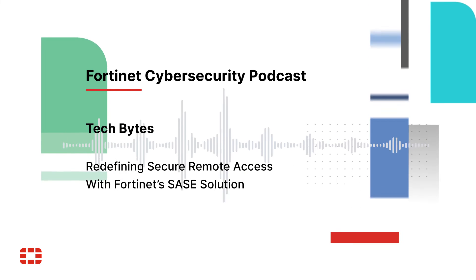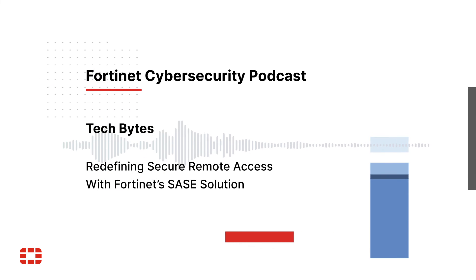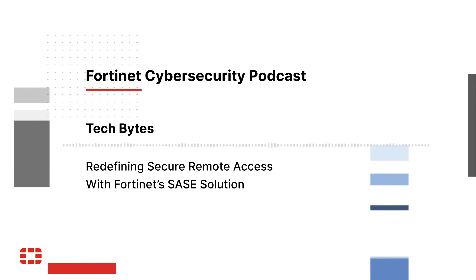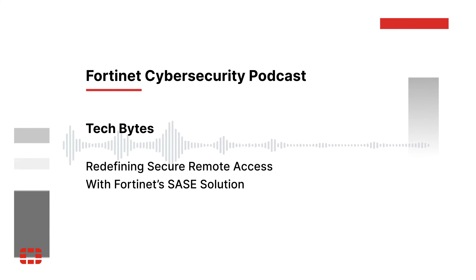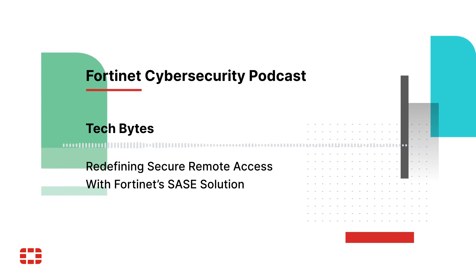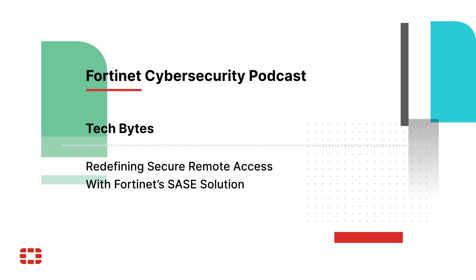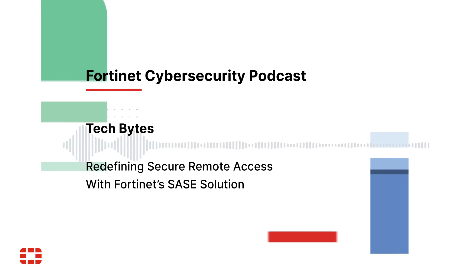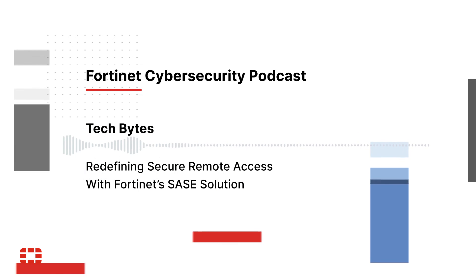You're getting both the user identity element and the device posture element — is it running the most up-to-date client, does it have malware present? One thing that differentiates Fortinet here: while the market says you have to go to a cloud-delivered SASE service for ZTNA, Fortinet's ZTNA application gateway is present in every FortiOS instance. So customers who have FortiOS deployed in any location can also use ZTNA there. That's why we call it Universal ZTNA — because FortiOS is the same everywhere.